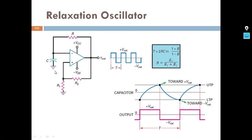So now the question comes: what is an oscillator? An oscillator is a device which produces an oscillating signal — either triangular or pulse type. In this case we are using a relaxation oscillator to produce a pulse waveform as shown in the diagram.